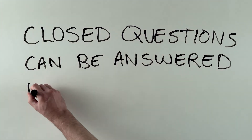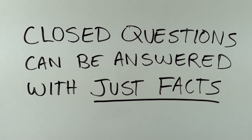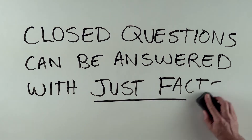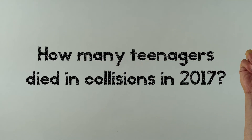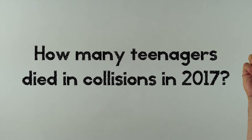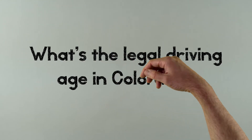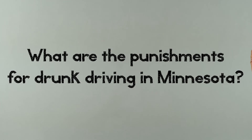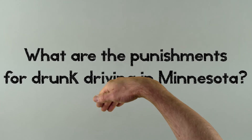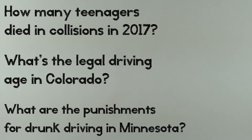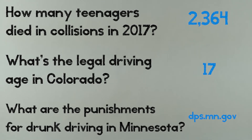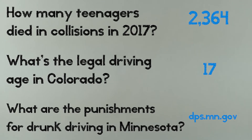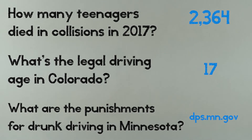Unlike an open-ended question, a closed question actually has a right or wrong answer. Here are some examples: How many teenagers died in collisions in 2017? What's the legal driving age in Colorado? What are the punishments for drunk driving in Minnesota? Anyone who asks these questions will come up with the same answers, because they're facts — nothing that requires interpretation.